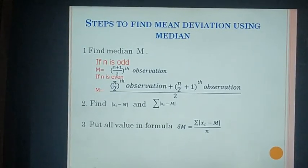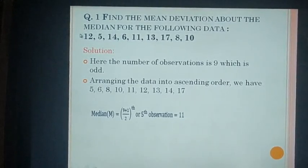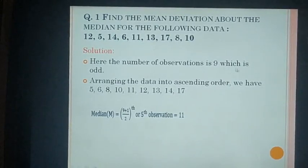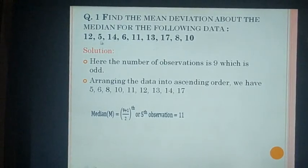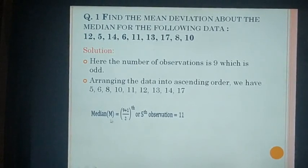Let's see the example. Find the mean deviation about the median for the following data. The observations are 12, 5, 14, 6, 11, 13, 17, 8, and 10. There are 9 observations, which is odd. First, we arrange in ascending order: 5, 6, 8, 10, 11, 12, 13, 14, 17.